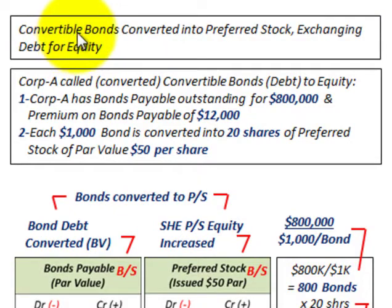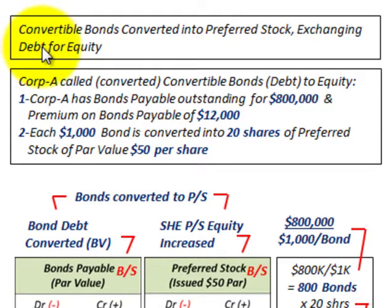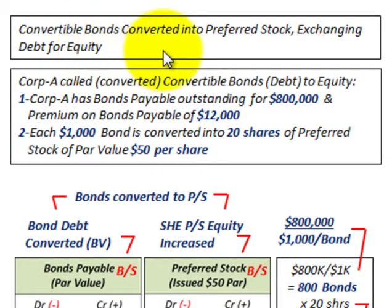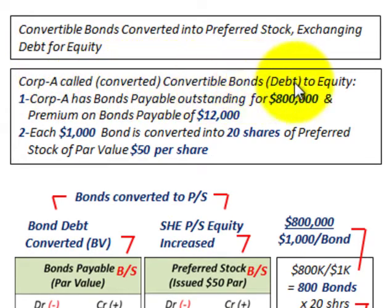What we're going to be going over here are convertible bonds that are converted into preferred stock. We're going to be exchanging debt for equity. The bonds represent debt and the preferred stock represents equity on our balance sheet. Corp A called or converted their convertible bonds, which is debt, to equity.